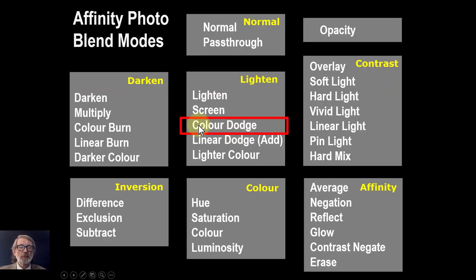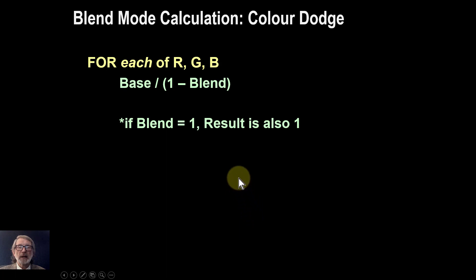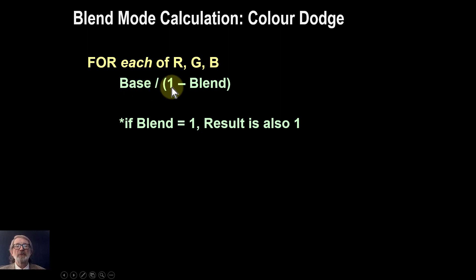The Color Dodge blend mode is part of the Lighten group, and it's the equivalent in the Lighten way to Color Burn in the Darken group. The calculation is very simply: the base layer value for each of red, green and blue, divided by 1 minus the blend — in other words, the inverse of the blend layer.